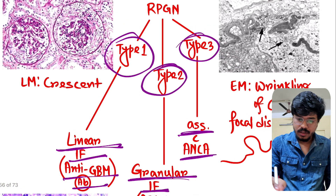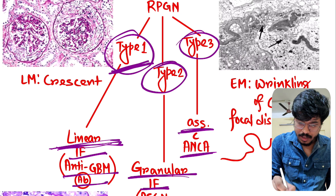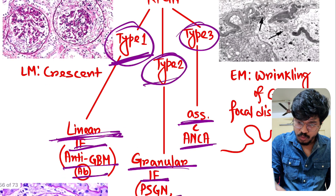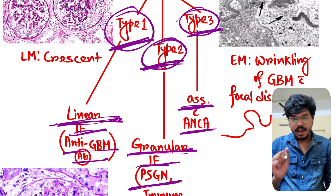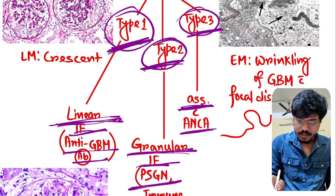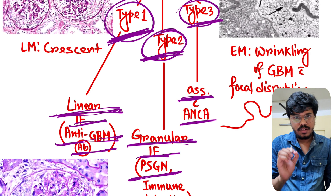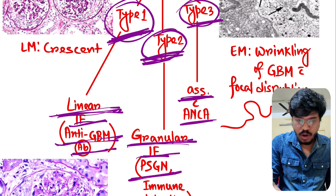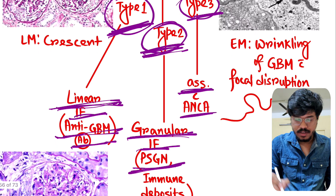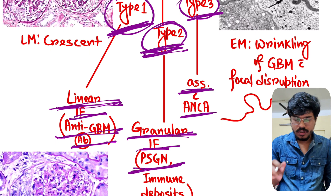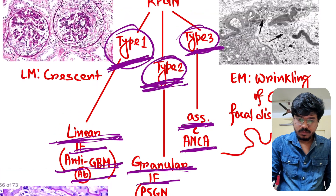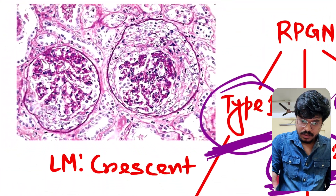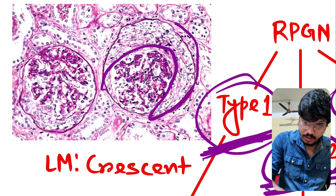To summarize: Type 1 RPGN — linear immunofluorescence, example anti-GBM antibody (Goodpasture syndrome). Type 2 RPGN — granular immunofluorescence, example PSGN. Type 3 RPGN — pauci-immune type associated with ANCA. Now looking at the light microscopy picture, we can see crescents in the glomeruli.